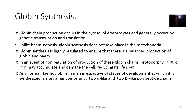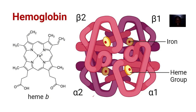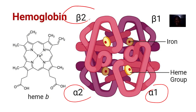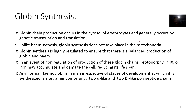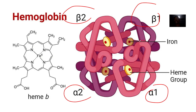Any normal hemoglobin in humans, irrespective of the stage of development, comprises alpha-like chains — alpha-2 and alpha-1. The globin forms the bulk of hemoglobin; the heme is kind of a secondary component. The globin is the one that forms the bulk of hemoglobin.